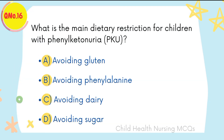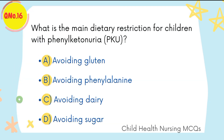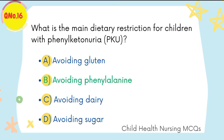Question number sixteen: what is the main dietary restriction for children with phenylketonuria (PKU)? B is the right option: avoiding phenylalanine.